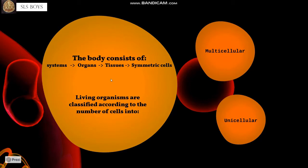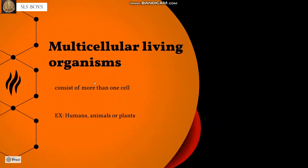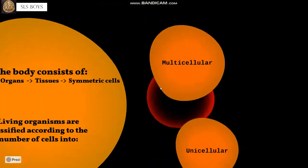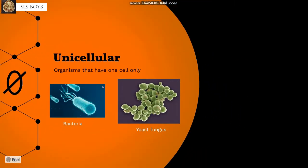Living organisms are classified according to the number of cells into multicellular and unicellular living organisms. Multicellular organisms consist of more than one cell — like humans, animals, or plants.